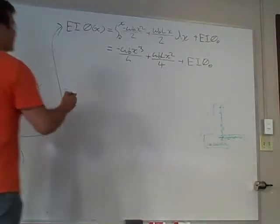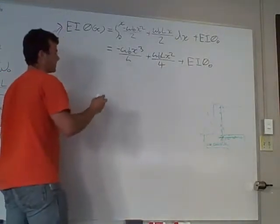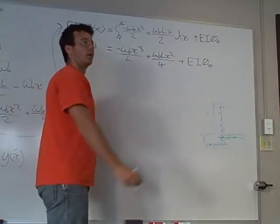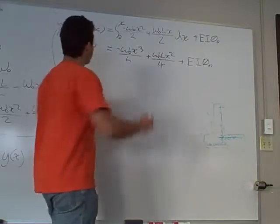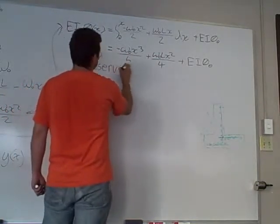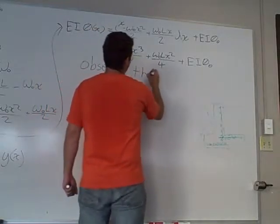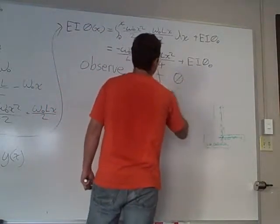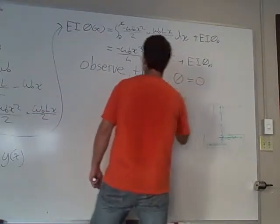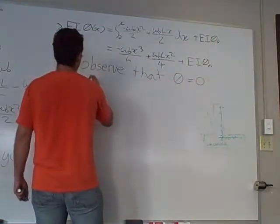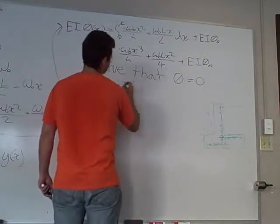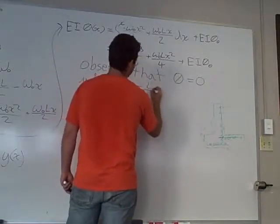So now, now we go back to our diagram and we are going to observe where theta, or observe that theta equals zero when X equals L over two.